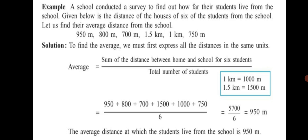Let's see another example. A school conducted a survey to find out how far the students live from the school. Given below is the distance of the houses of 6 students from the school. Let us find the average distance from the school: 950 meters, 800 meters, 700 meters, 1.5 kilometers. You will see the difference in units here. All are in meters except 1.5 is given in kilometers. Even 1 is given in kilometers. 750 is again meters.